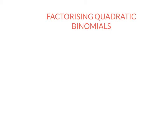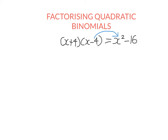So let's first understand what factorizing actually is — we can't do it if we don't know what it is. In the previous video, we had something like x plus four times x minus four, and we used the FOIL method to expand it, getting x squared minus 16. Starting with brackets and ending without brackets is called expanding. Going the other way — starting with no brackets and ending up with brackets — that's called factorizing.